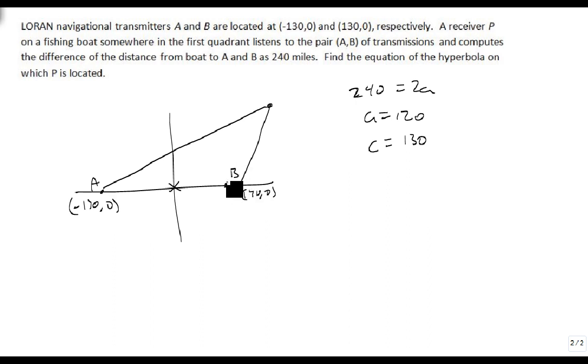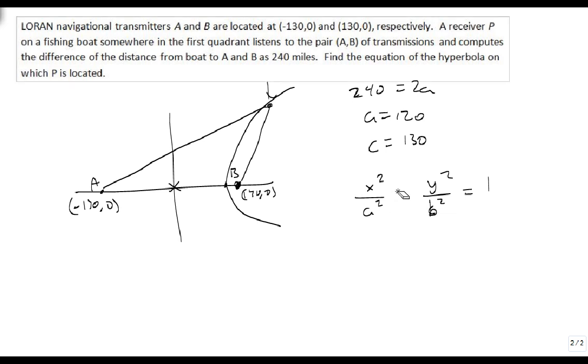So here's our bounding box. He's going to be sitting somewhere on this line right here. We're using (0, 0) as our center. So we're going to get x² over a² minus y² over b² equals 1.